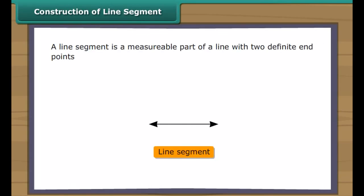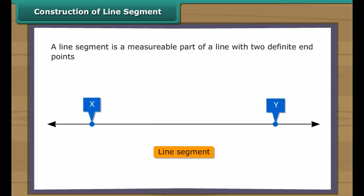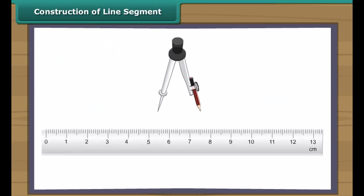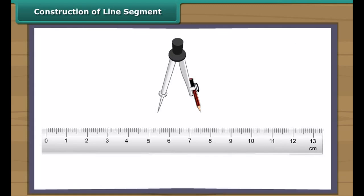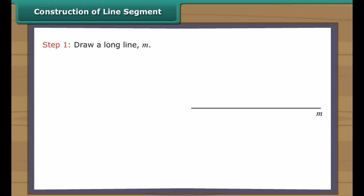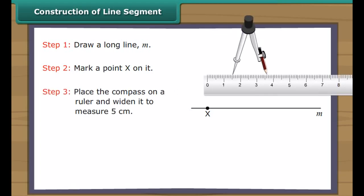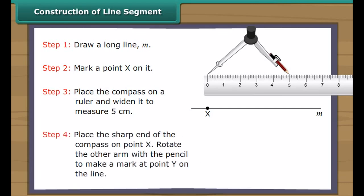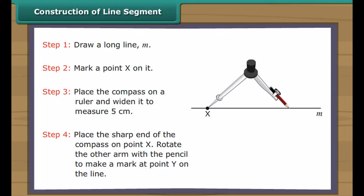Construction of line segment. A line segment is a measurable part of a line with two definite end points. We use a ruler and a compass to construct a line segment. Let us construct a line segment five centimetres long. Draw a long line M and mark a point X on it. Place the compass on a ruler and widen it to measure five centimetres. Place the sharp end of the compass on point X and rotate the other arm with the pencil to make a mark at point Y on the same line.